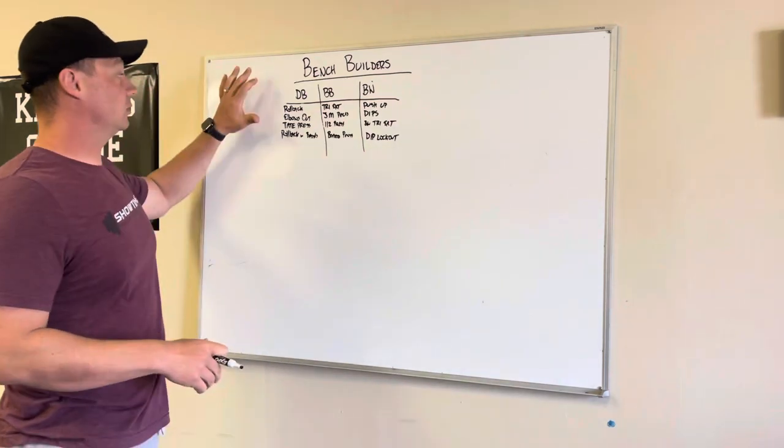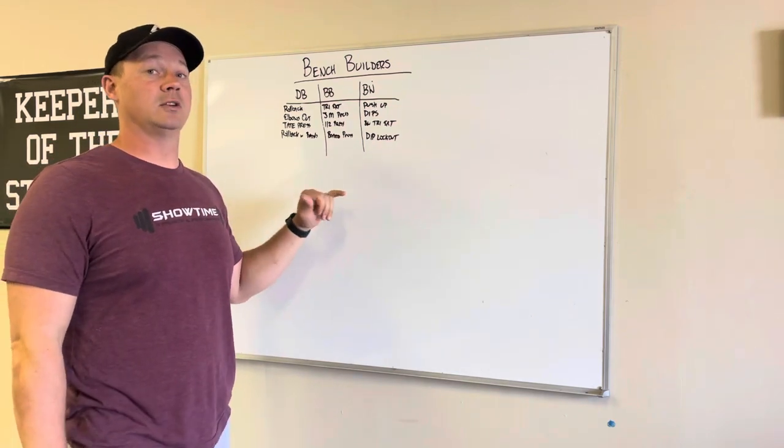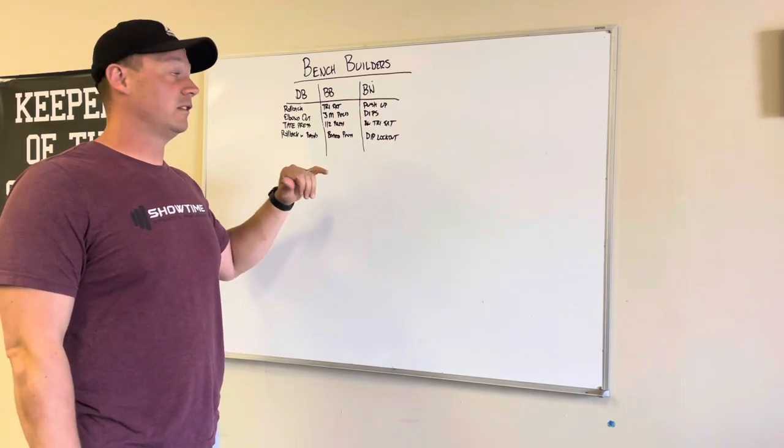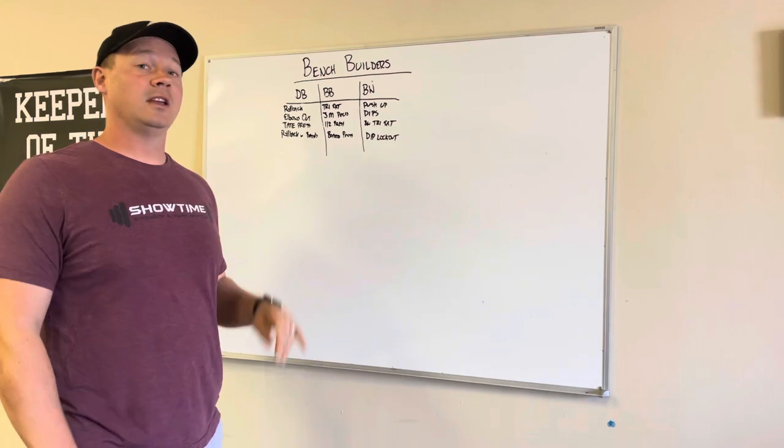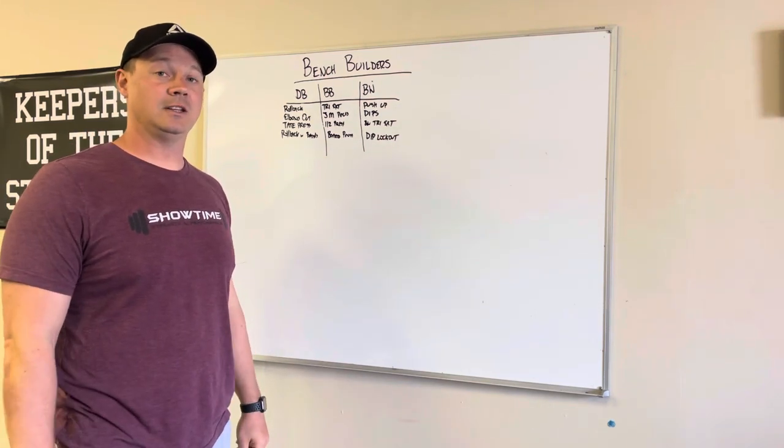So these are some really good bench builders for the triceps. Again, the triceps are the most important thing for locking out a big bench press. If you guys have any questions, comments, leave them below. Or feel free to email me. Nick at Showtime Street.